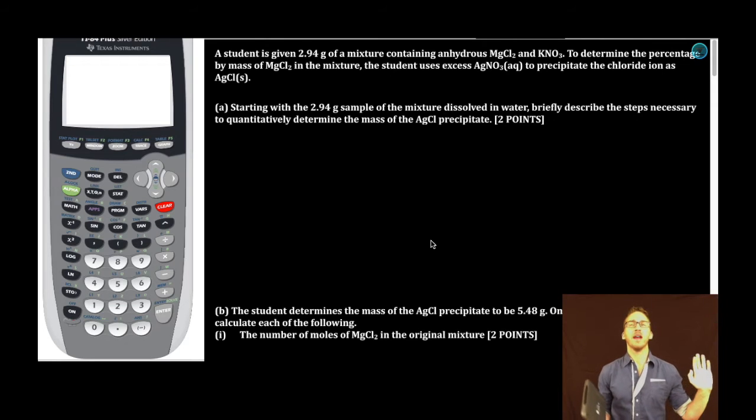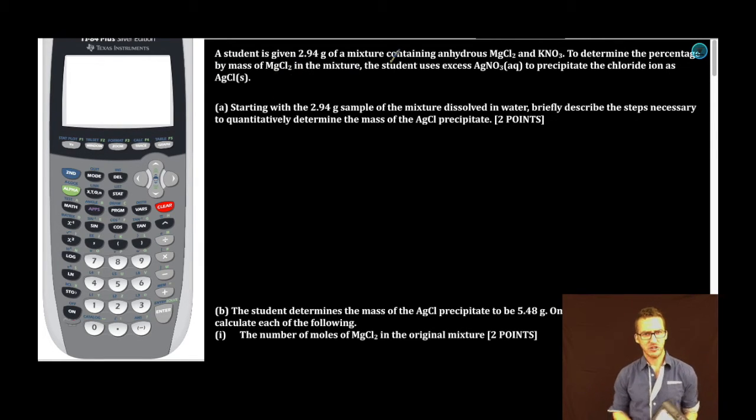Hey, what's up everybody? Who is ready for another thriller of a free response? If only we could do these all the time. A student is given 2.94 grams of a mixture containing anhydrous MgCl2 and KNO3. To determine the percentage by mass of magnesium chloride in the mixture, the student uses excess silver nitrate to precipitate the chloride ions as AgCl.